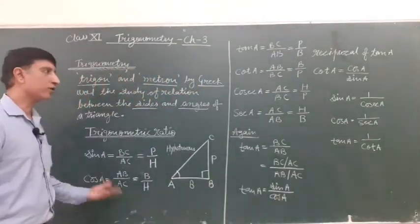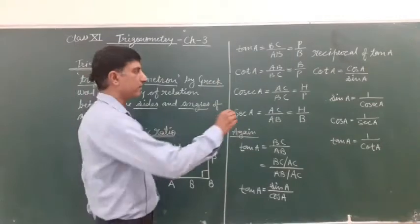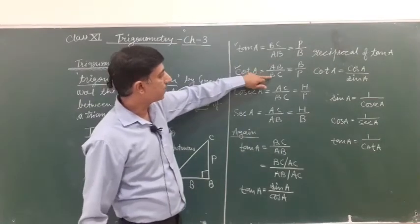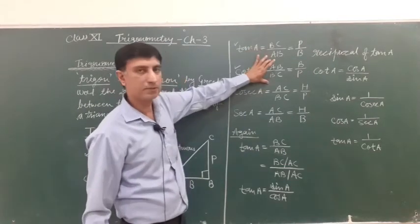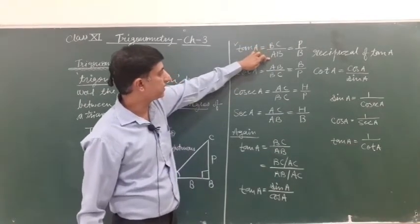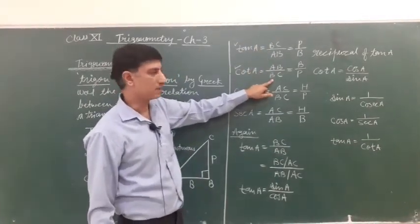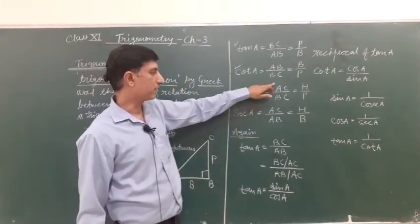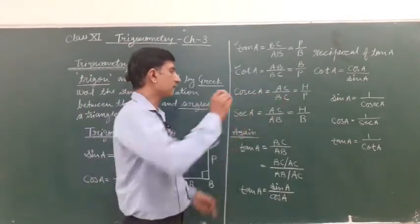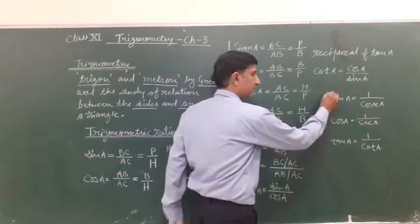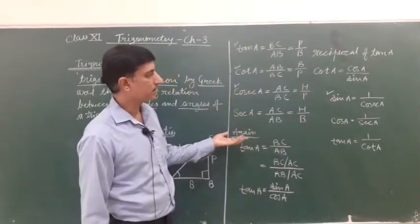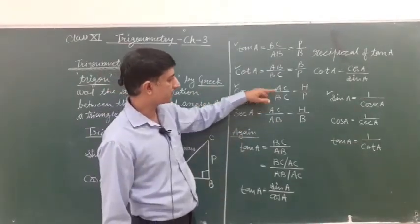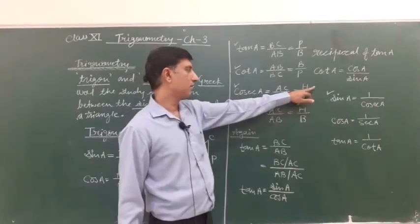Cosec A it is equal to AC upon BC. Cosec is reciprocal of sine A or we can say sine A is reciprocal of cosec A. Then it is represent by AC upon BC or H upon P.